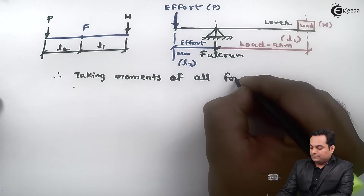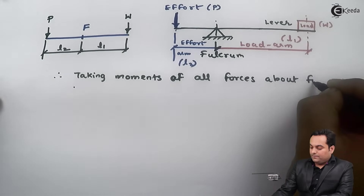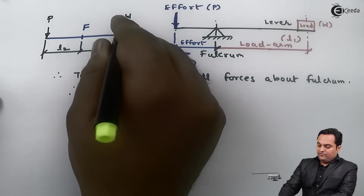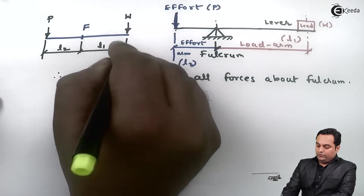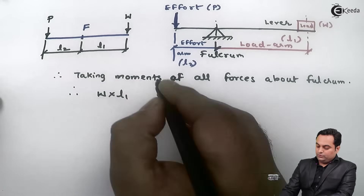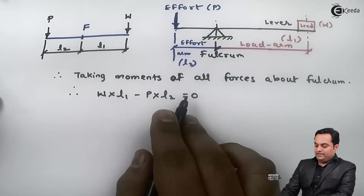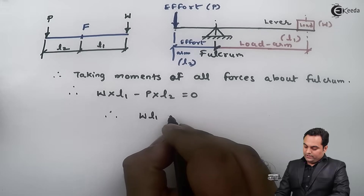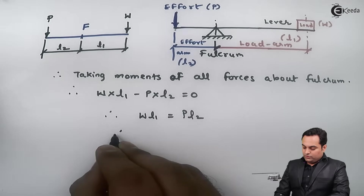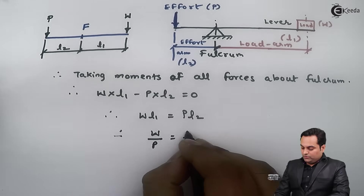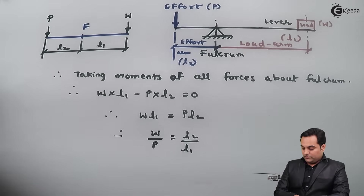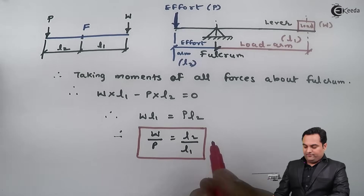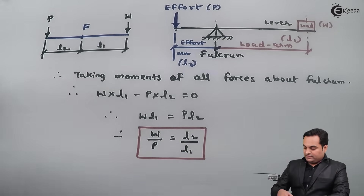Taking moments of all forces about the fulcrum, and considering clockwise moment as positive: W × L1 − P × L2 = 0 for the equilibrium condition. Therefore, W × L1 = P × L2, which gives load upon effort equals L2 divided by L1.